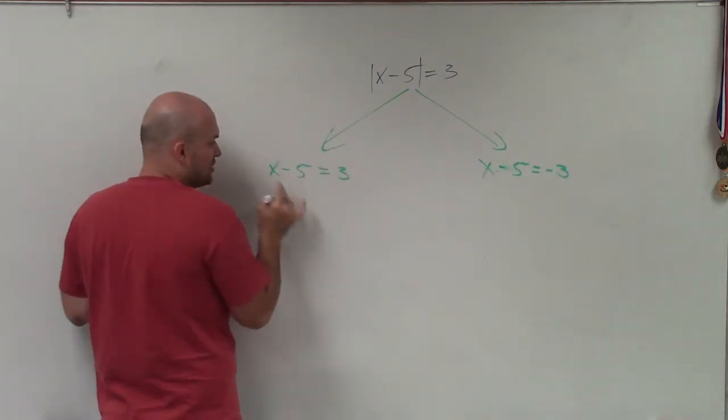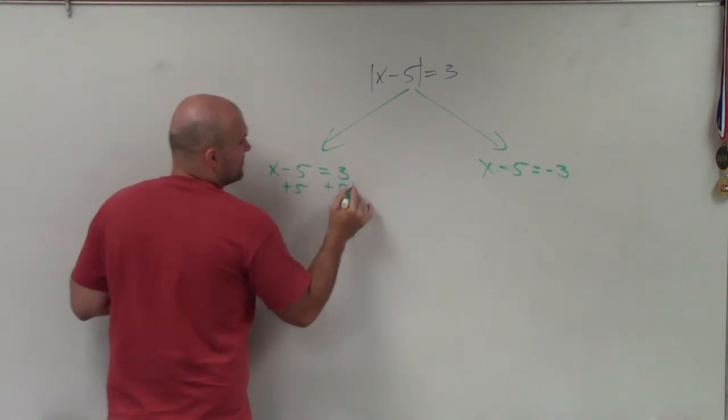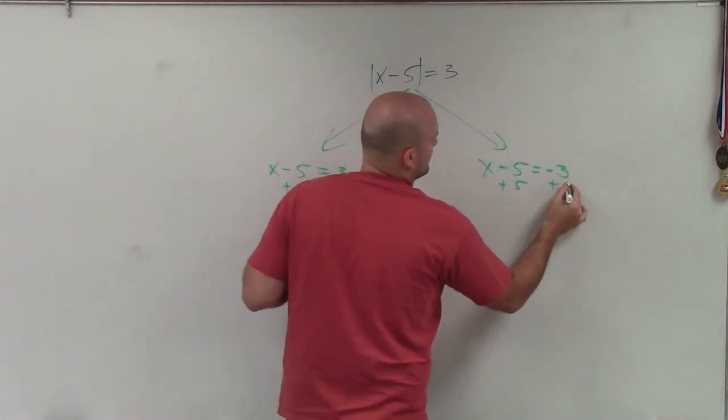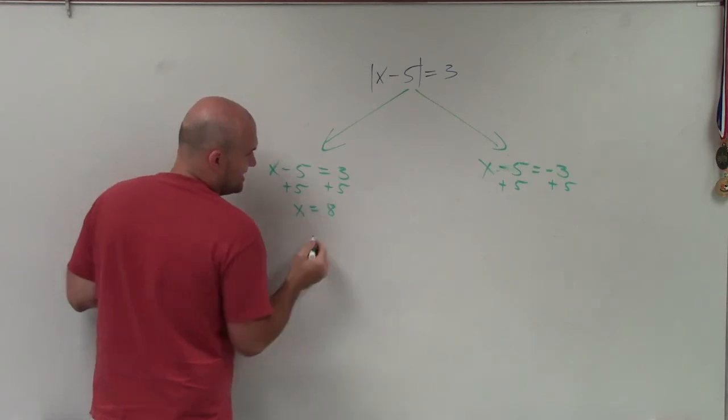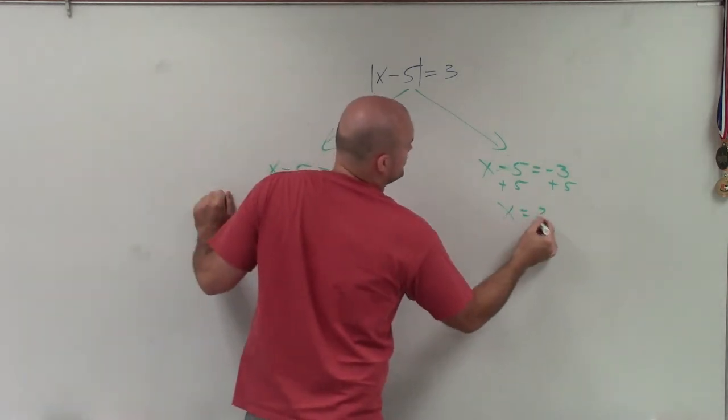Now, all I simply need to do is solve for x. So I add 5 on both sides. And therefore, I have x equals 8 or x equals positive 2.